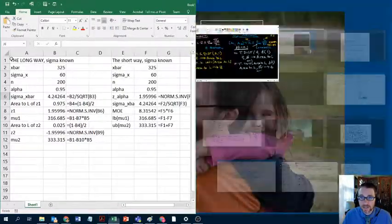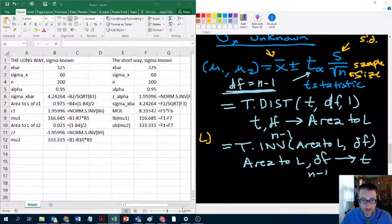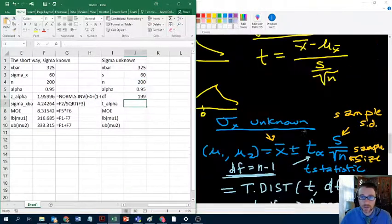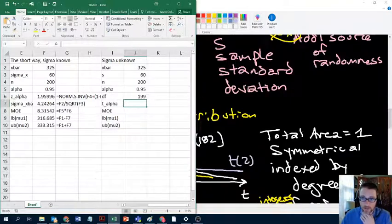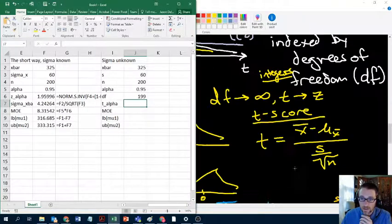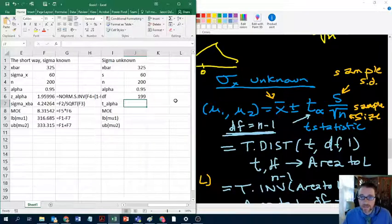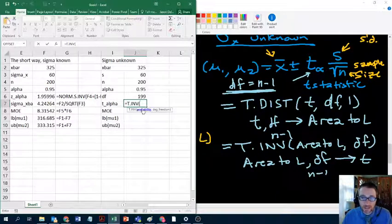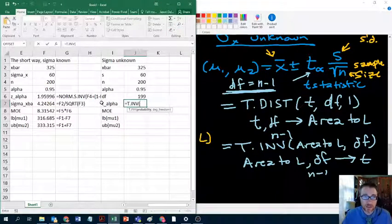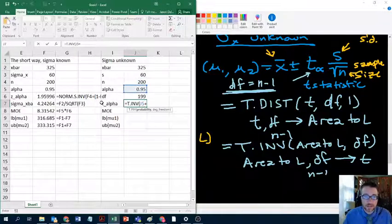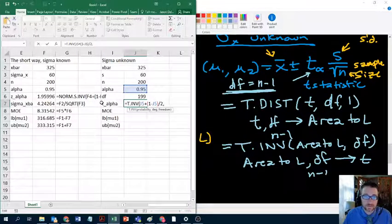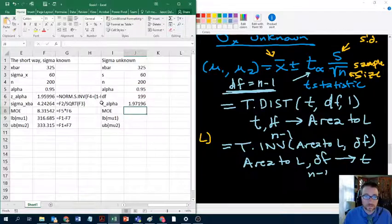So our degrees of freedom, we just established that that's going to be n minus 1. So in this case, we have 199 degrees of freedom. Just going to find the formula again. There it is, right there. And then my T alpha is going to be T dot inv, the area to the left. Now, the area to the left is going to be the same as it was before, right? It's still going to be alpha plus 1 minus alpha divided by 2. I forgot the degrees of freedom. Sure enough, there we go.